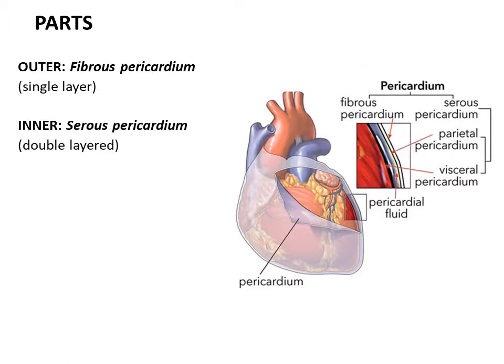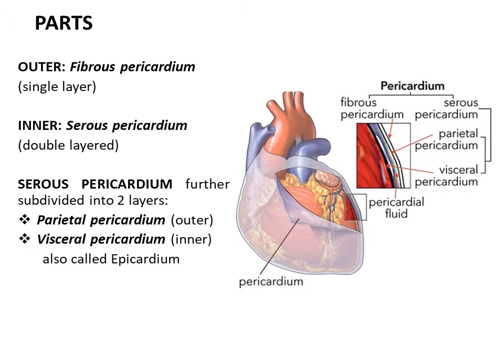The pericardium consists of two parts: an outer single layer of fibrous pericardium and an inner serous pericardium. The serous pericardium is a double-layered serous sac which is further subdivided into two layers: an outer parietal layer adherent to the overlying fibrous pericardium, and an inner visceral layer adherent to the underlying myocardium, also called epicardium.